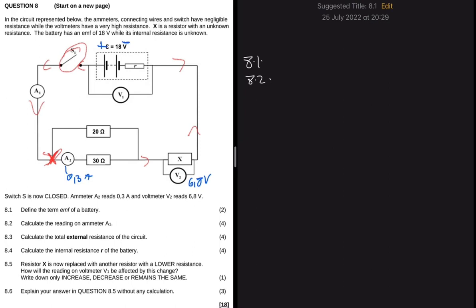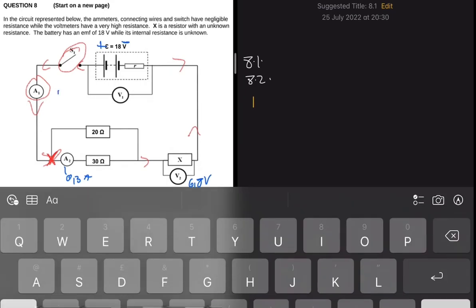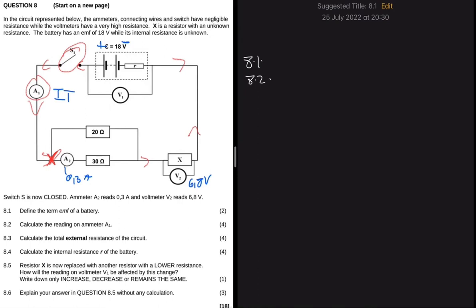You will realize that A1 is in series relative to the rest of the circuit, so A1 is going to read I total. What this question is basically asking us is to find I total. After the current splits, we have a current of 0.3 A through one branch, and we need to find the current through the 20 ohm resistor. The sum of those two will equal I total.